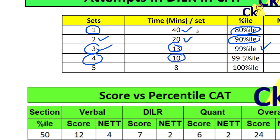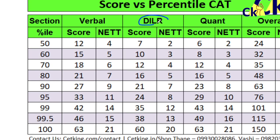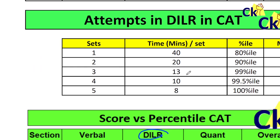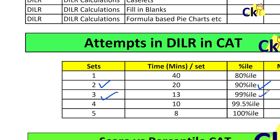If you look at a typical CAT paper, the average person takes around 10 to 13 minutes per set. So for this person, 3 or 2 sets is an ideal target. And that is the fact — look at this — 2 sets if you attempt, you are touching 90 percentile. Why? Because to get 90 percentile in the DILR section, my target score is 21 questions correct, 7 questions correct. So if I attempt 8 and get 7 questions correct, I can touch 90 percentile. Now that is assuming your accuracy is good, around 85 to 90 percent accuracy.